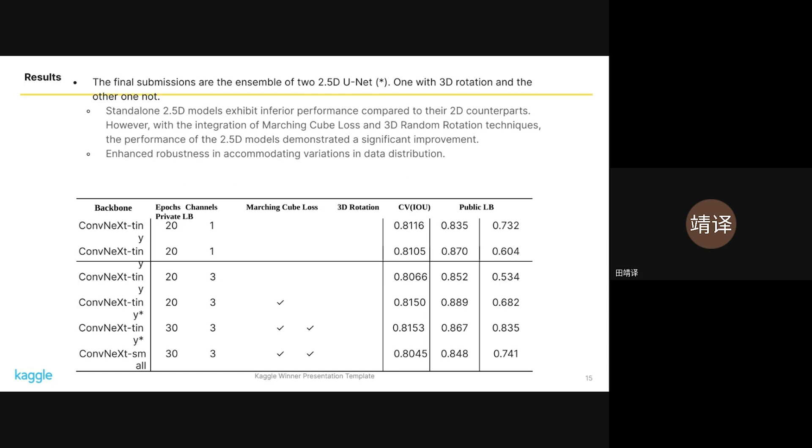For submission, we utilized an ensemble of 2.5D U-Net models differing in their use of 3D rotations. From the results, standalone 2.5D models exhibit inferior performance compared to their 2D counterparts. However, with the integration of Marching Cube loss and 3D random rotation techniques, the performance of the 2.5D models demonstrated a significant improvement.